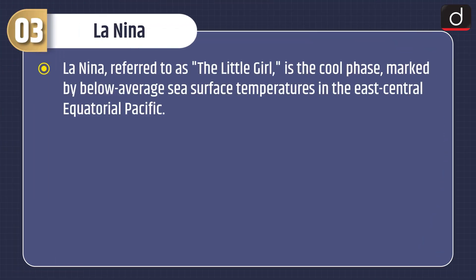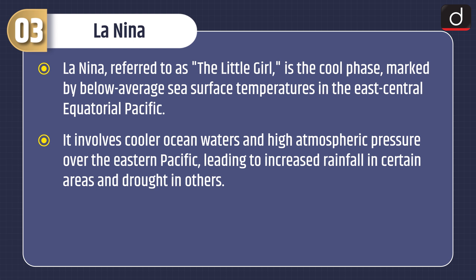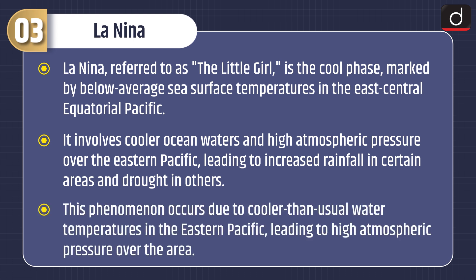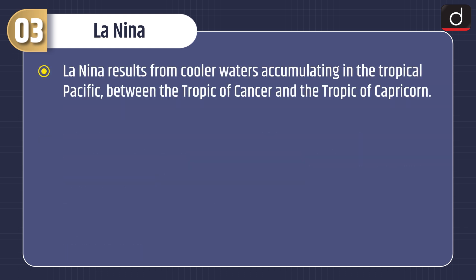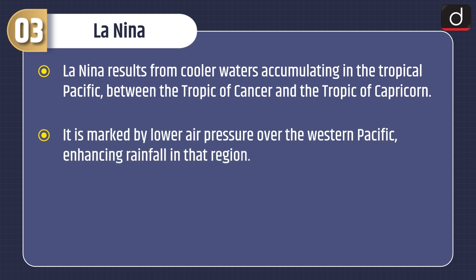Now let's discuss about La Niña. La Niña, referred to as 'the little girl,' is the cool phase marked by below-average sea surface temperatures in the east-central equatorial Pacific. It involves cooler ocean waters and high atmospheric pressure over the eastern Pacific, leading to increased rainfall in certain areas and drought in others. This phenomenon occurs due to cooler than usual water temperatures in the eastern Pacific, leading to high atmospheric pressure over the area. La Niña results from cooler waters accumulating in the tropical Pacific between the Tropic of Cancer and the Tropic of Capricorn. It is marked by lower air pressure over the western Pacific, enhancing rainfall in that region.